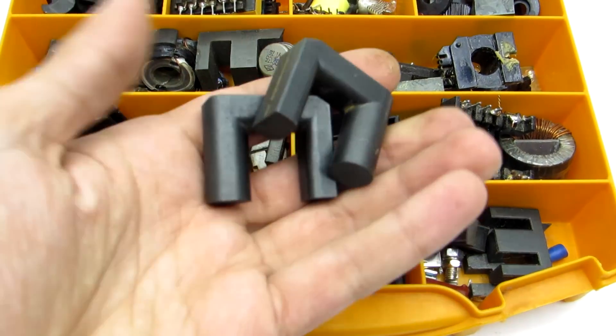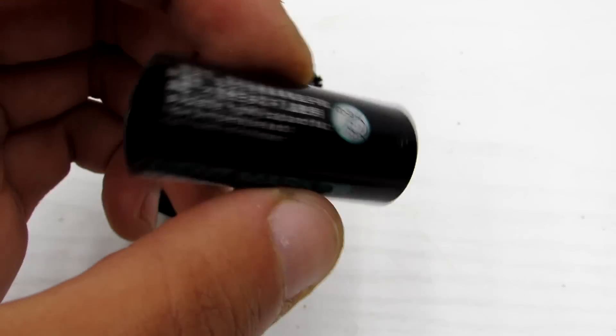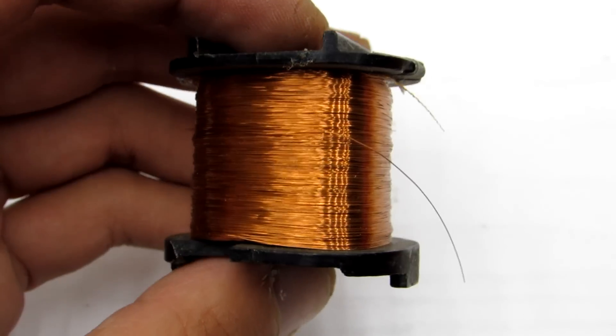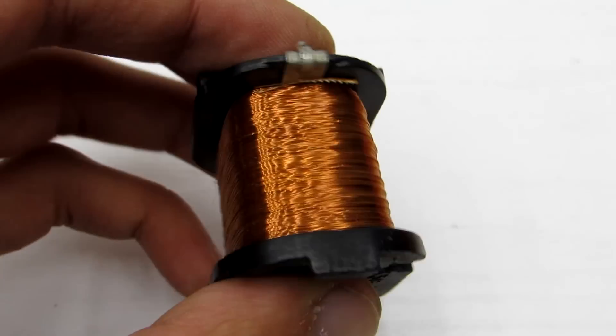At first I took a compact core of TDKS, frame from an old marker. Wire must have good varnish insulation and a diameter of about 0.18 millimeters.